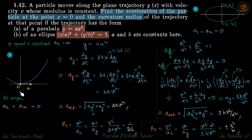A particle is traveling on a parabolic path with a constant velocity v, and in the second part it is traveling on an elliptical path, again with a constant velocity v. We need to find what is the acceleration of the particle at x equal to 0 in both cases.